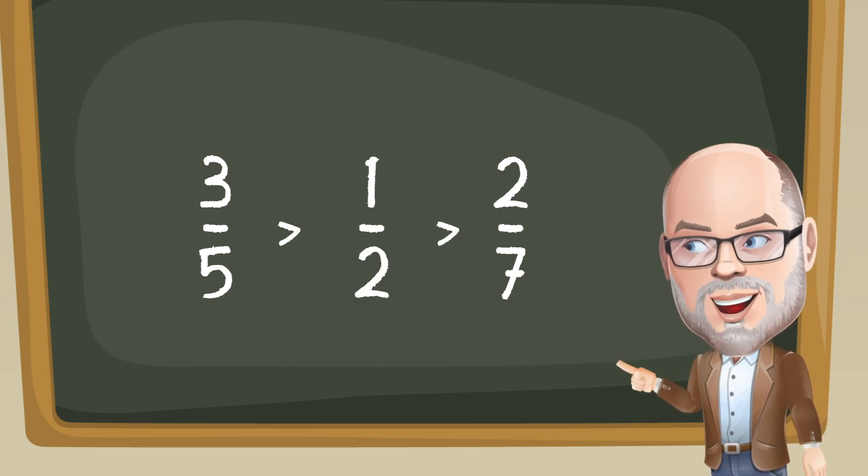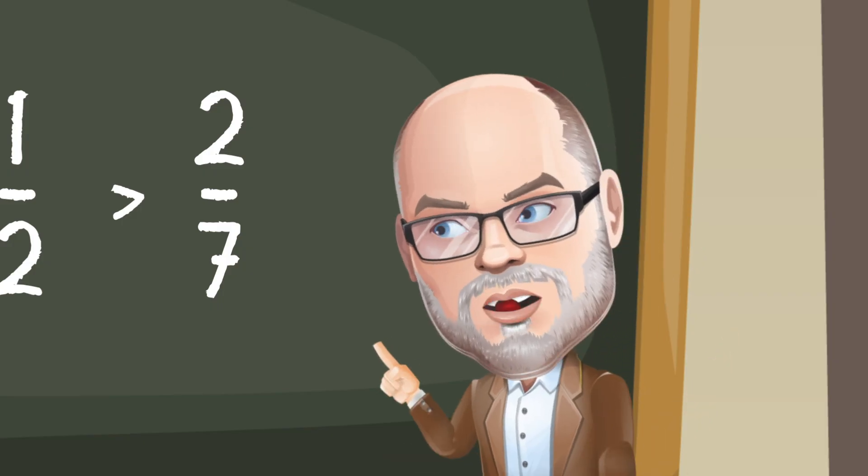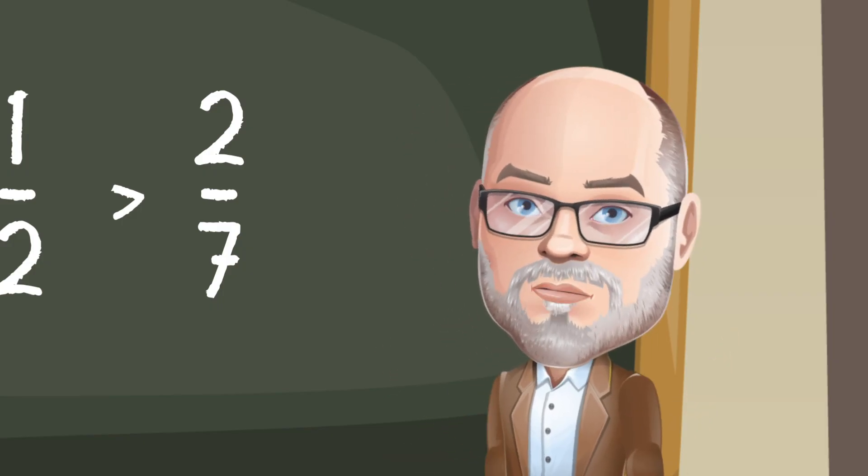2 sevenths, on the other hand, is less than one-half. Knowing that one fraction is more than a half and that the other is a little less than a half helps us compare fractions.